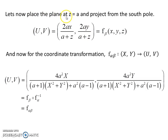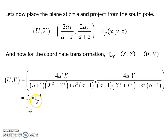Now we map the sphere onto the plane z = +a — a plane above the sphere — projecting from the south pole. This gives coordinates (U, V) related to the original coordinates on the manifold. The coordinate transformation F_alpha_beta maps from (X, Y) to (U, V): the domain is (X, Y) and the image is (U, V). That mapping is the composition of two maps and gives us the change of coordinates between the two charts — a coordinate transformation between two charts on the manifold.